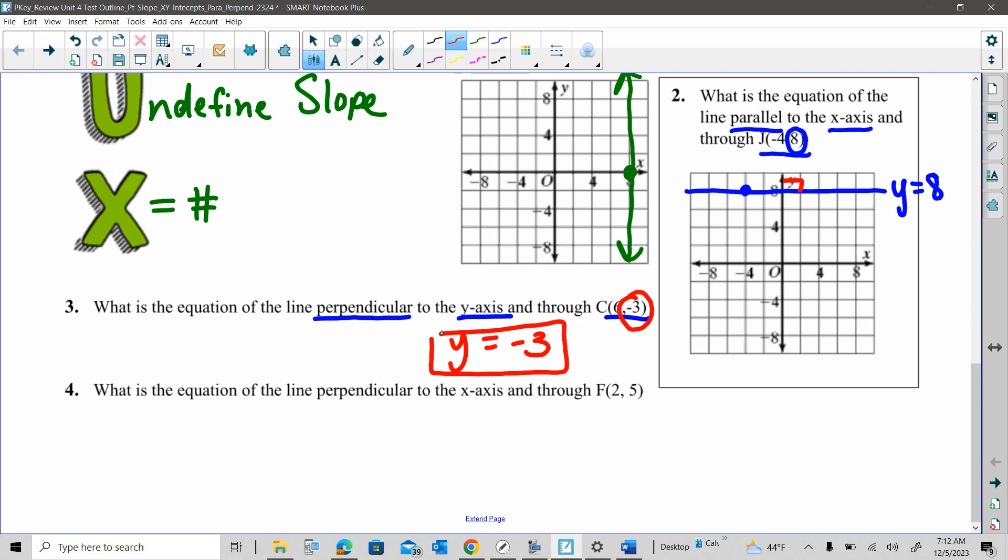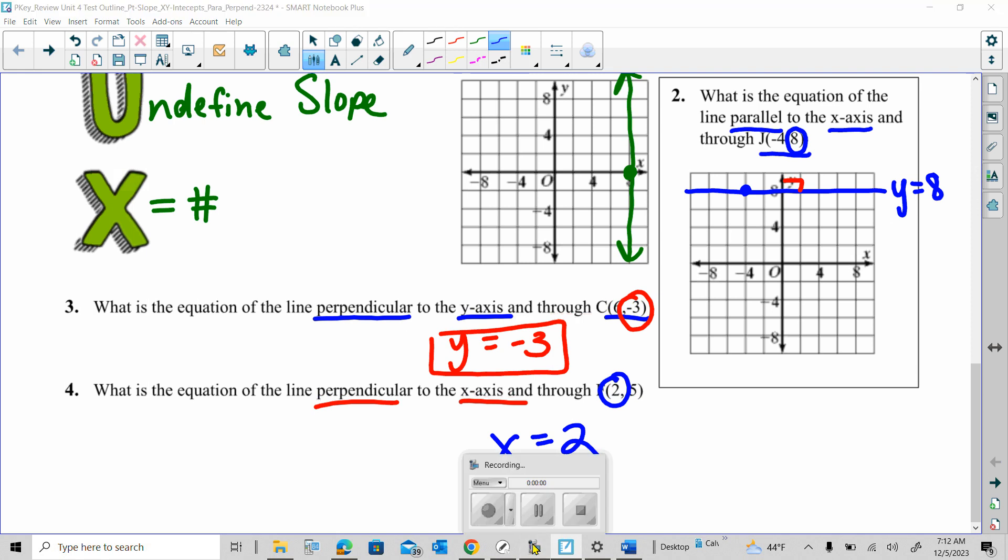So if I'm doing perpendicular, number four, perpendicular to the x-axis, the x-axis is a horizontal line. Perpendicular would be vertical. So that means I need to focus on verticals, which deal with x's. So this would be x equals two. So know these facts, all right? And then we're going to get into x and y-intercepts on part two. So let me go to the next page.